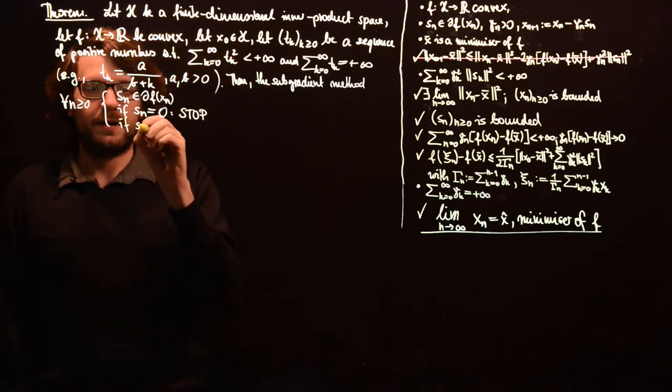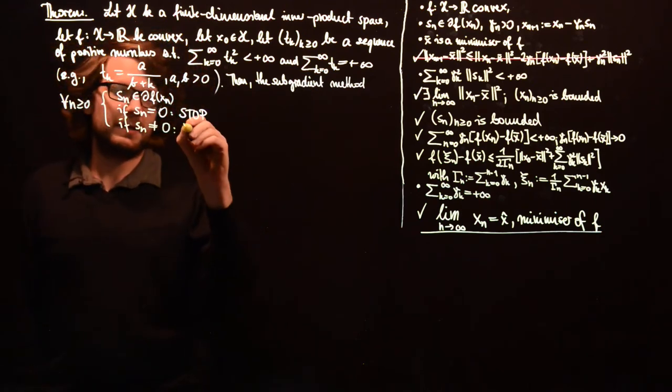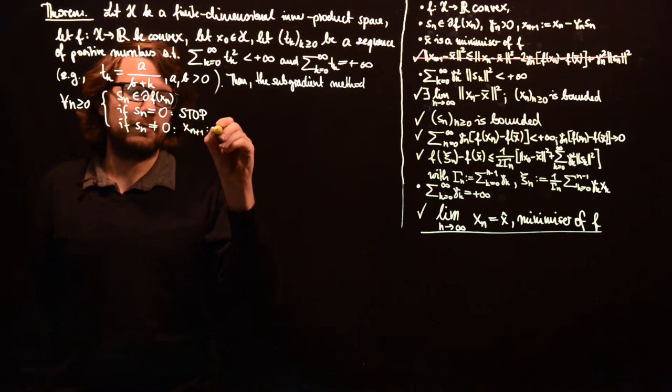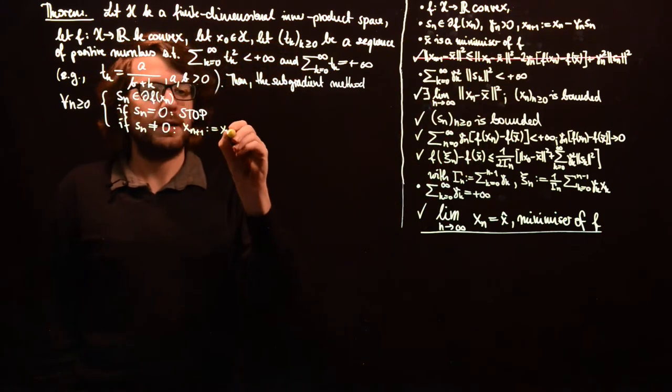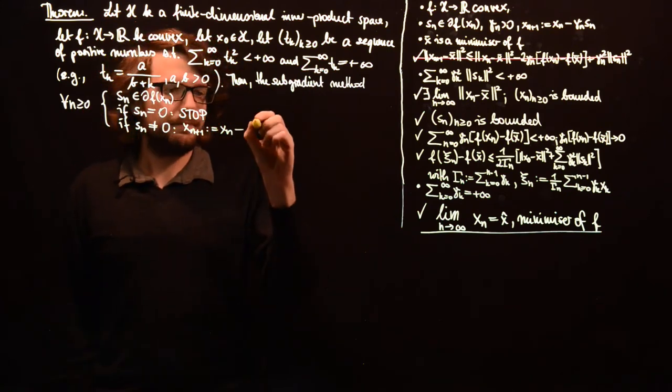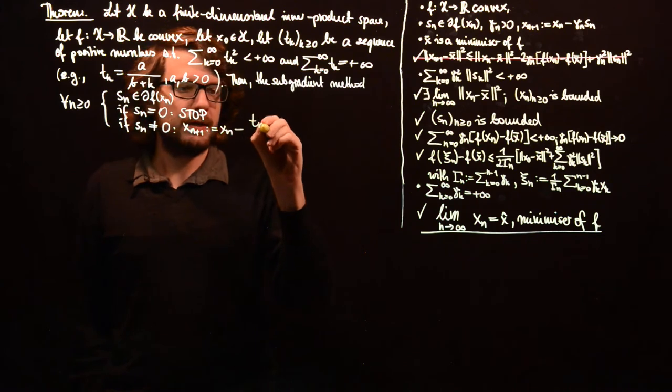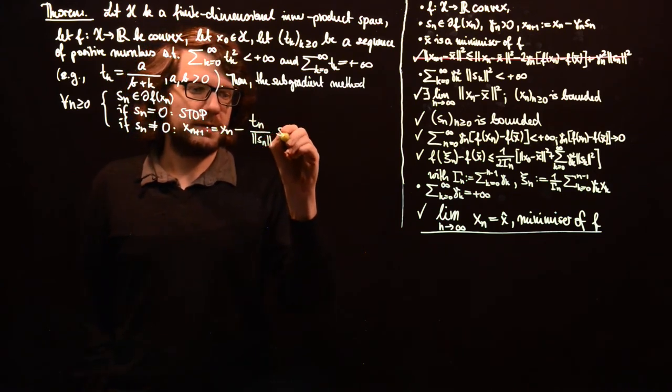And if s_n is not equal to 0, then we just set x_{n+1} to x_n minus t_n over norm s_n times s_n.